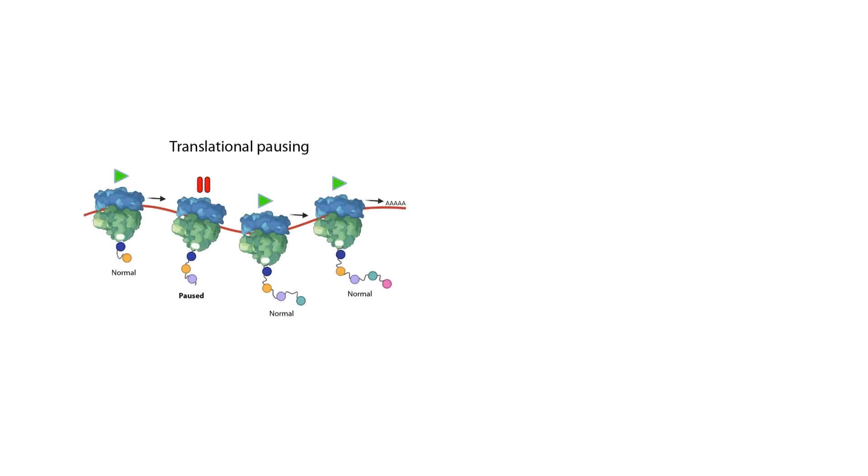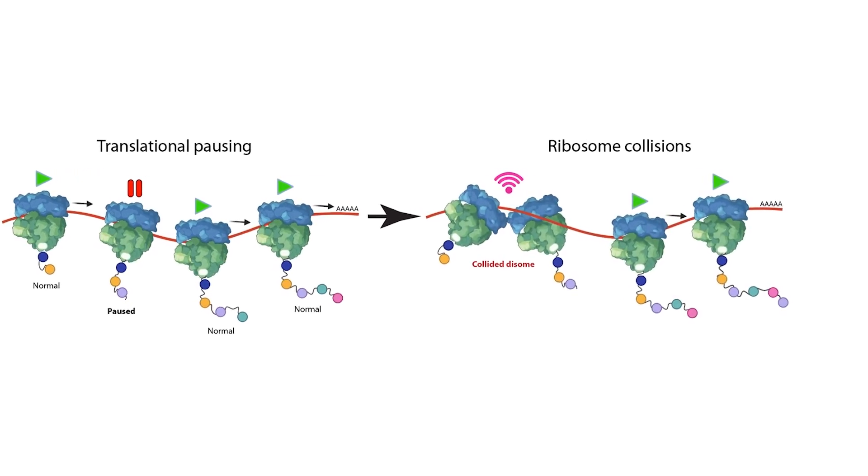In certain cases, protein synthesis can go awry. This can happen in cases like certain diseases, certain stresses impressed upon cells, or when cells get infected with certain types of pathogens. In some special cases, you have ribosomes sitting along the length of an mRNA moving at the same speed, but when there is a perturbation to the protein synthesis machinery, sometimes one ribosome tends to slow down while the others continue at the same speed, causing ribosome collisions.